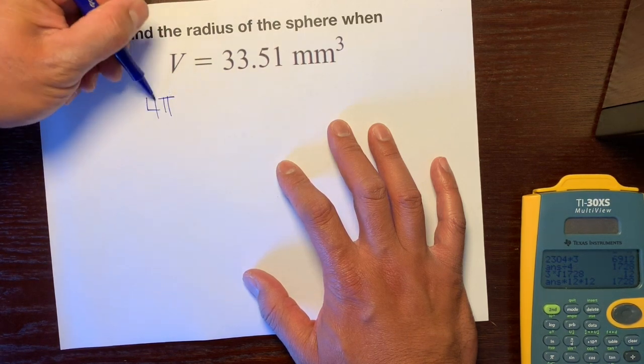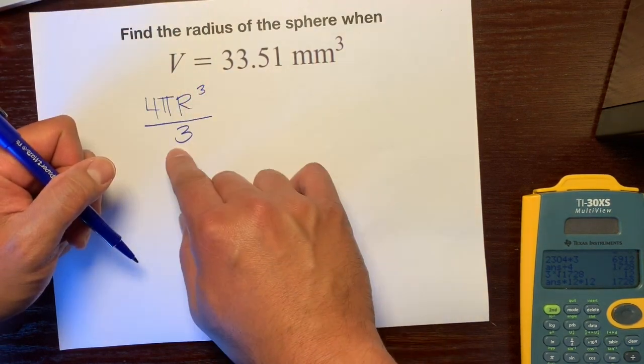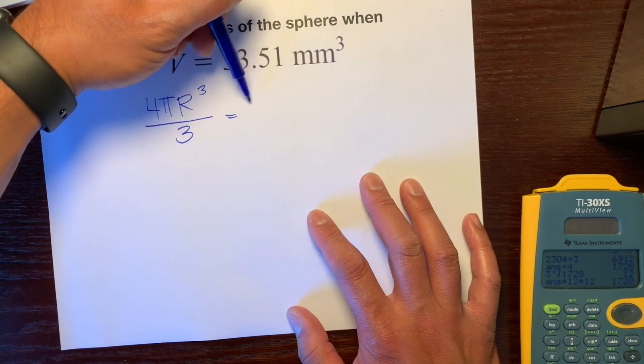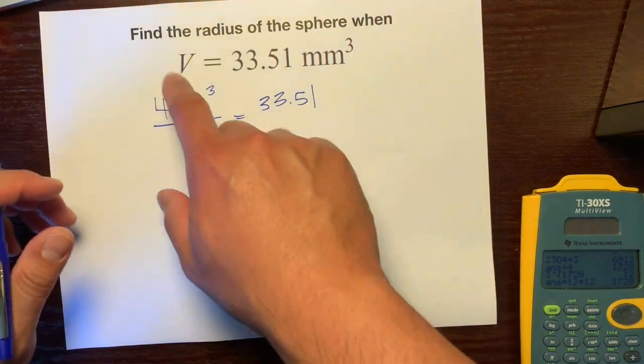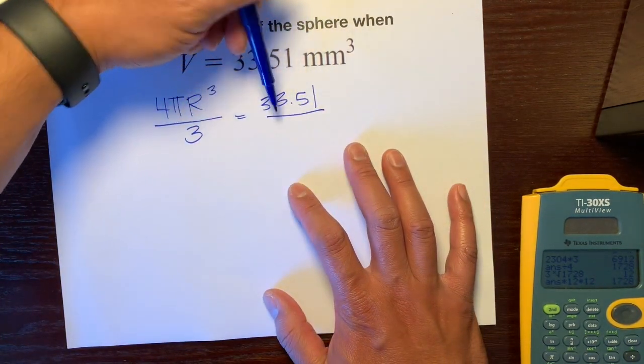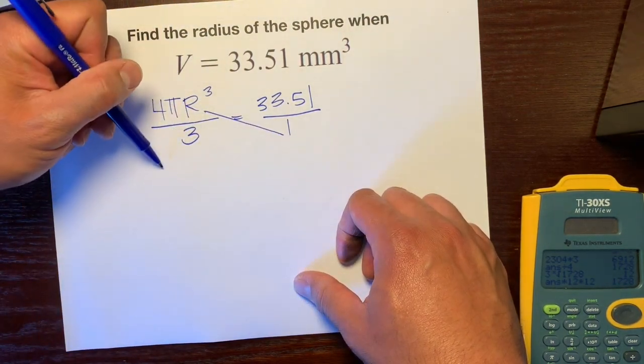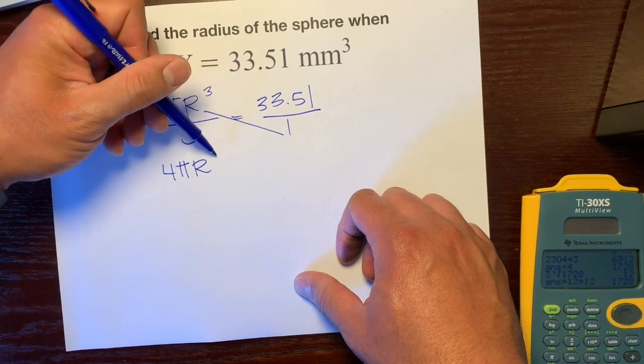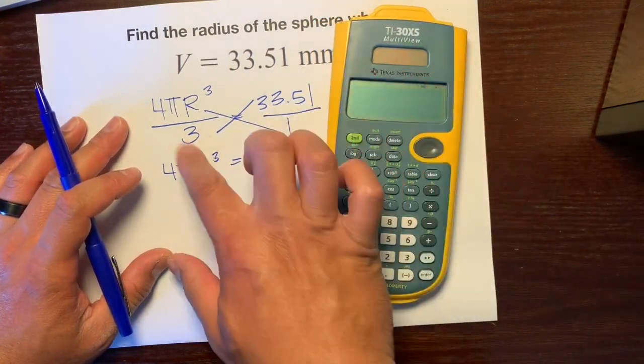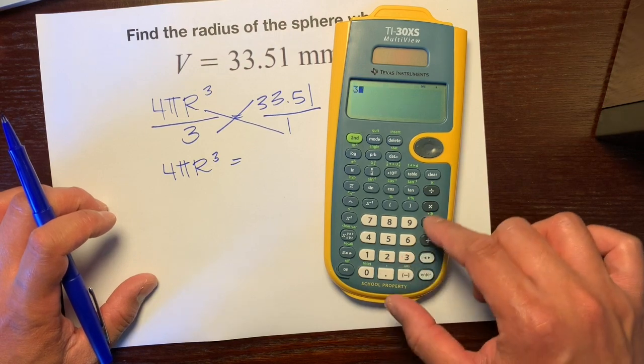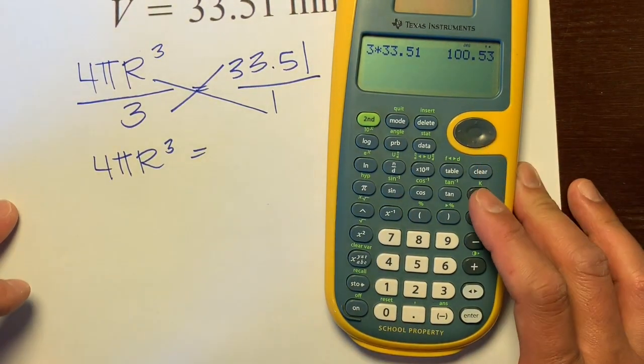Our formula is 4πr³ divided by 3. We're going to set it equal to the actual volume, which is 33.51. Since there's a fraction here, let's make this into a fraction by showing that invisible one, and let's just cross multiply. So 1 times all this is 4πr³ equals—let's take our calculator—3 times 33.51 is 100.53.